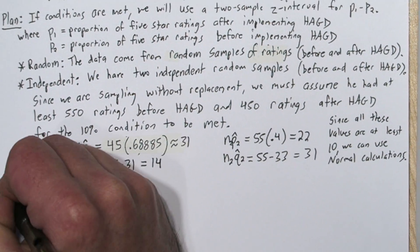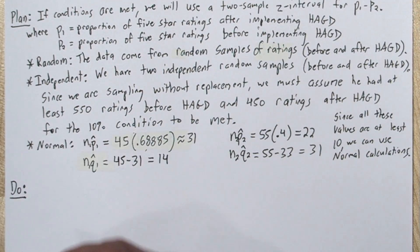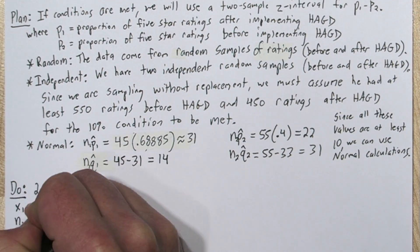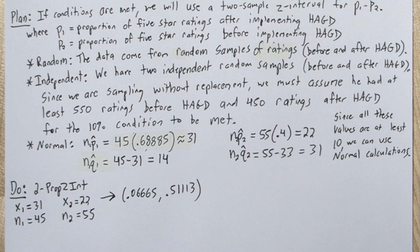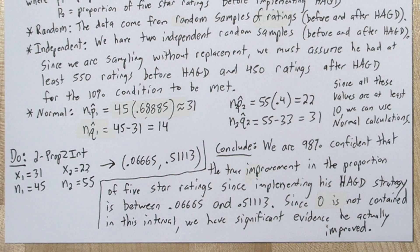So in the do step, let's write down what we input and what it gave as an output. So let's conclude. We are 98% confident that the true improvement in the proportion of 5 star ratings since implementing his have a great day strategy is between 0.06665 and 0.51113. Since 0 is not contained in this interval, we have significant evidence that he actually improved.